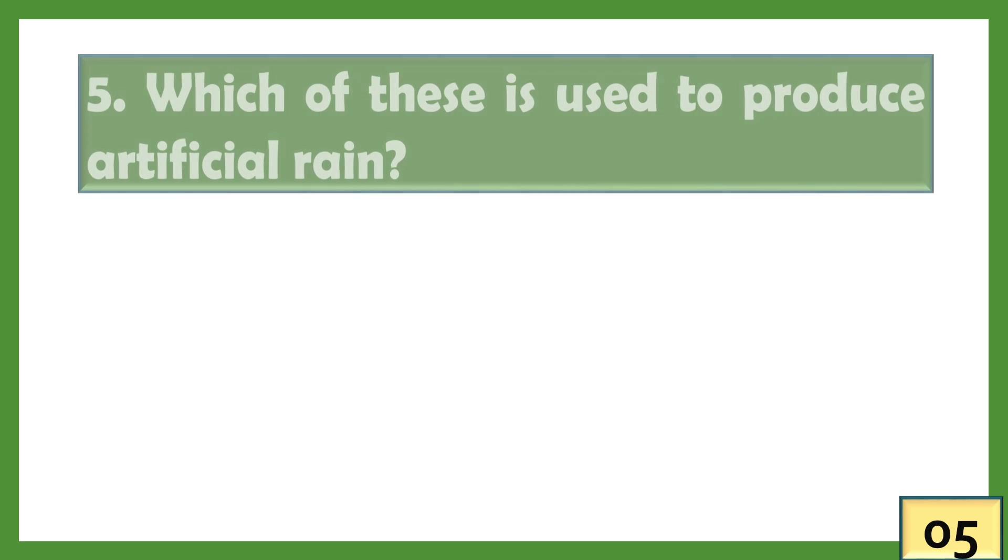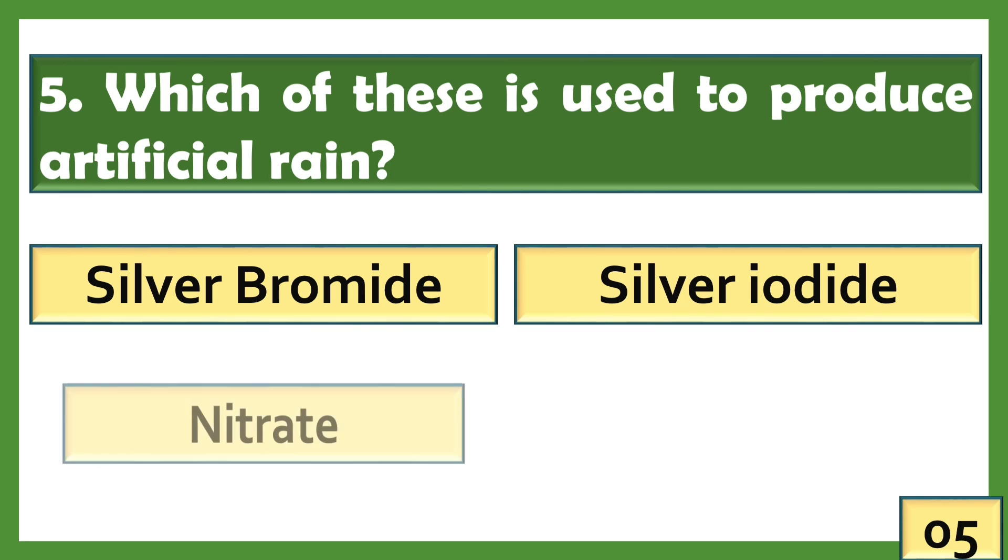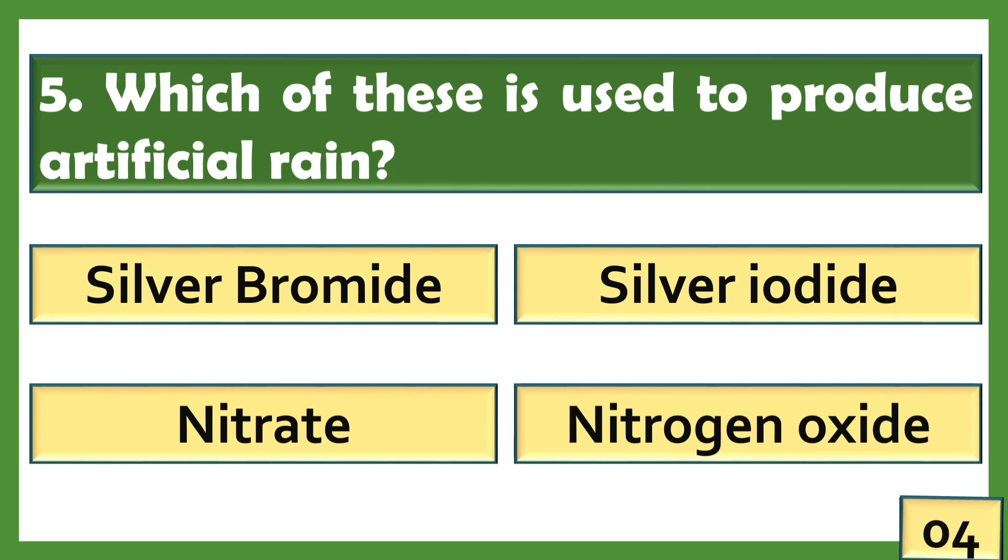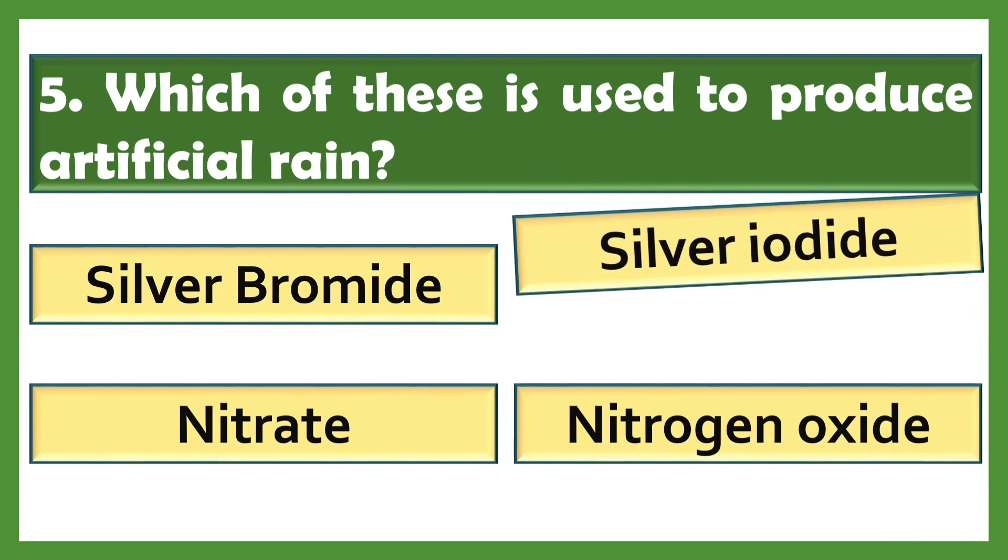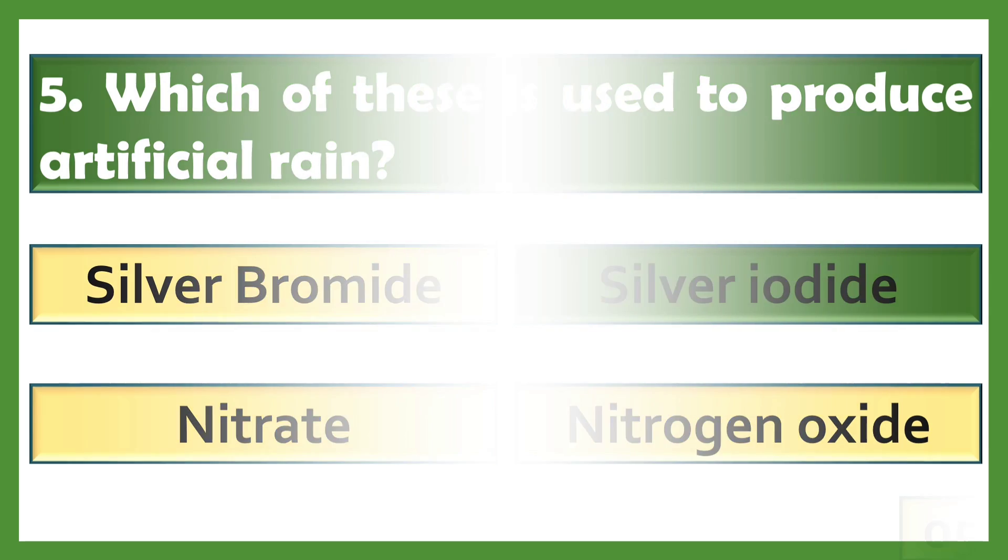Which of these is used to produce artificial rain? Silver iodide.